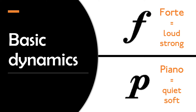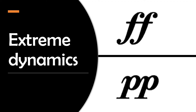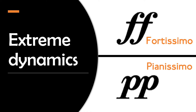Sometimes we have extremes of loud or soft in a piece of music. A double F marking stands for fortissimo, meaning very loud. Here is an example of some music that is being played fortissimo. A double P stands for pianissimo, meaning very soft. The suffix -issimo means 'very' in Italian, so you can see how fortissimo and pianissimo come from forte and piano. Here's an example of a piece of music that is being played pianissimo.